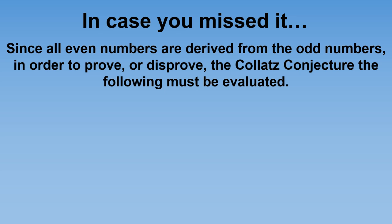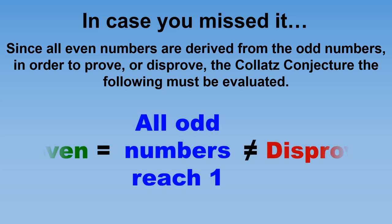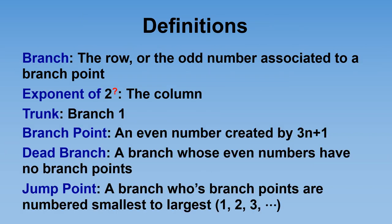The second part of the definition of the Collatz conjecture: bottom line is you only have to prove all odd numbers reach one. Why? Because all even numbers will reach an odd number. Rows are labeled by the odd numbers only — in the spirit of a Collatz tree we will call them branches. The columns are designated by the exponents of 2. Also note that the exponent tells how many times you need to iterate dividing by 2 to reach an odd number. Branch points are self-explanatory. Dead branches are self-explanatory but will be easier to understand in a moment. For jump points, just count and label from left to right for each branch — this will be easier to understand in a moment.